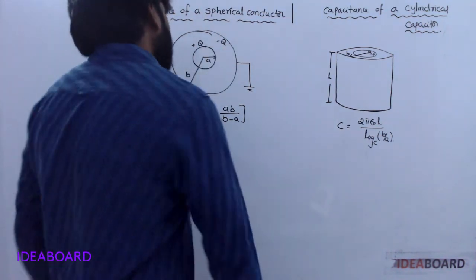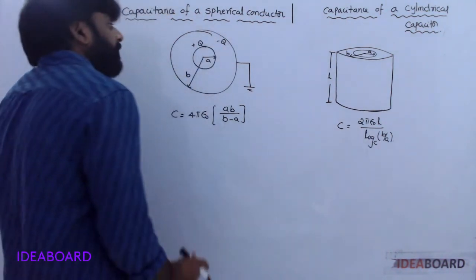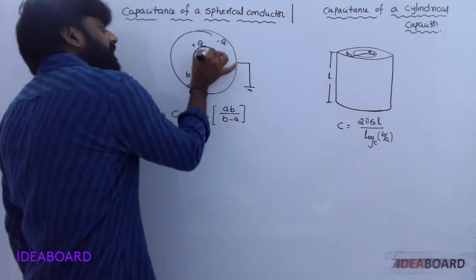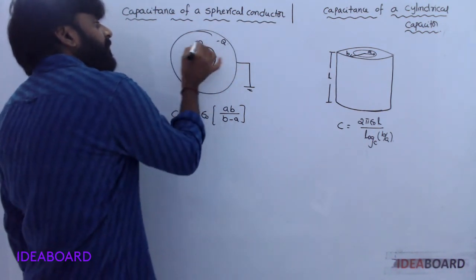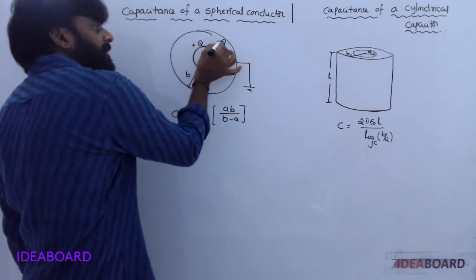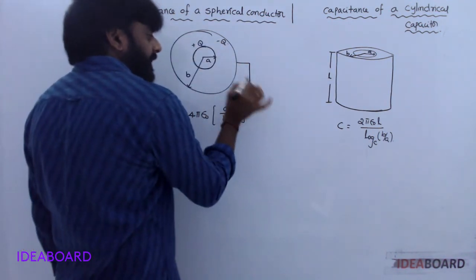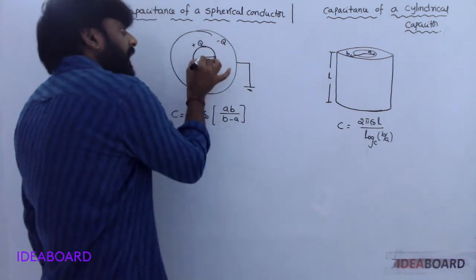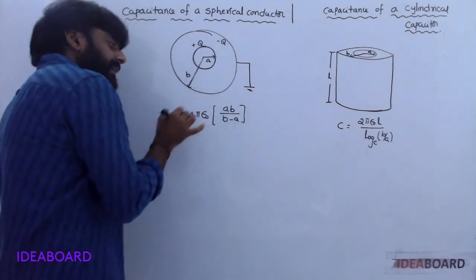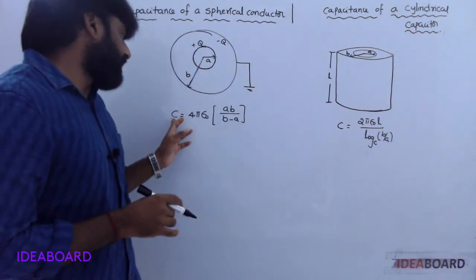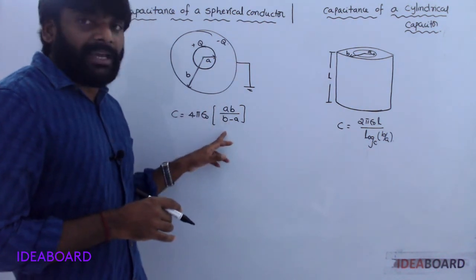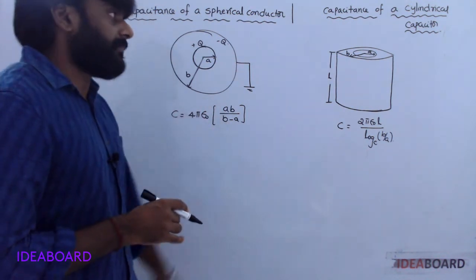Capacitance of a spherical conductor: for two concentric spheres, the inner sphere has charge +Q and the induced charge on the inner side of the outer sphere is −Q. The outer sphere is connected to ground. If inner radius is A and outer sphere radius is B, the capacitance is C = 4πε₀·AB/(B − A).